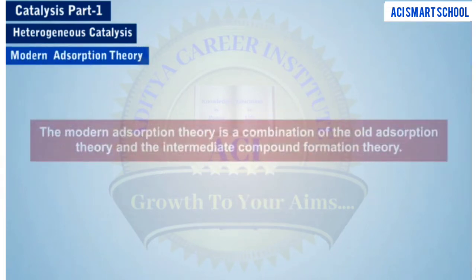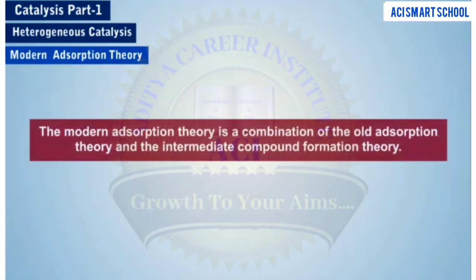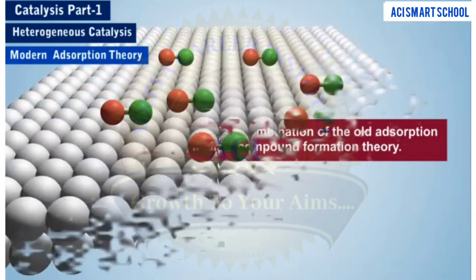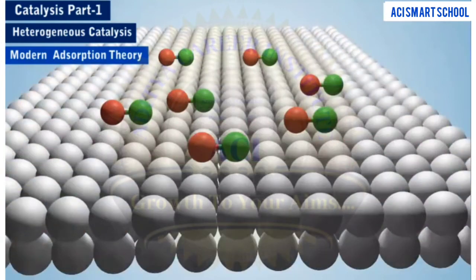Let us now move on to the modern adsorption theory of heterogeneous catalysis. The modern adsorption theory is a combination of the old adsorption theory and the intermediate compound formation theory. This theory explains most examples of heterogeneous catalysis. According to the modern adsorption theory, free valences are present on the surface of the solid catalyst.